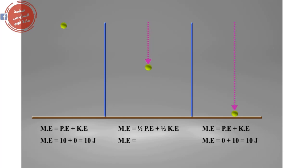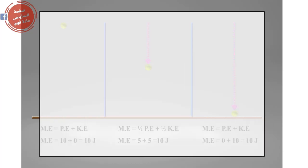At the midpoint, the potential energy equals the kinetic energy. So the mechanical energy equals half of the potential energy plus half of the kinetic energy. Hence, the mechanical energy equals 10 joules.